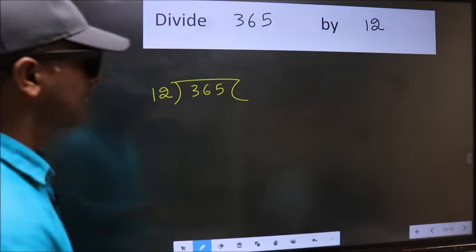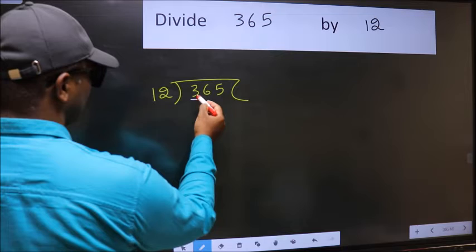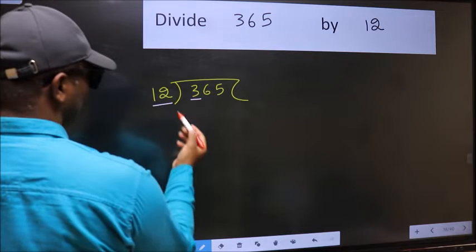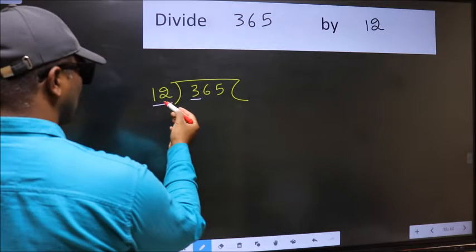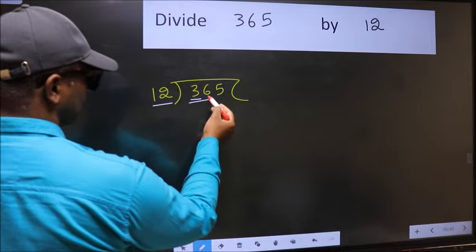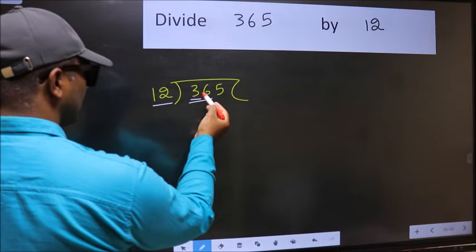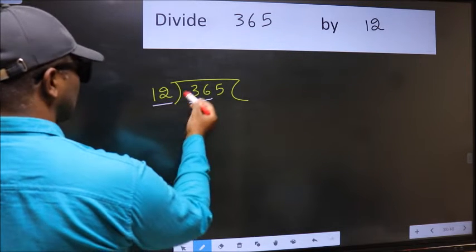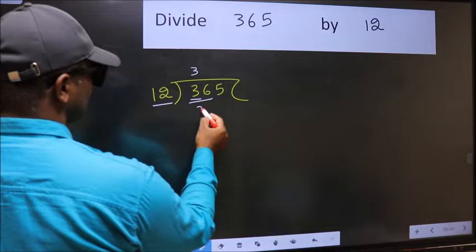Next. Here we have 3 and here 12. 3 is smaller than 12, so we should take 2 numbers, 36. When do we get 36 in 12 table? 12 times 3 is 36.